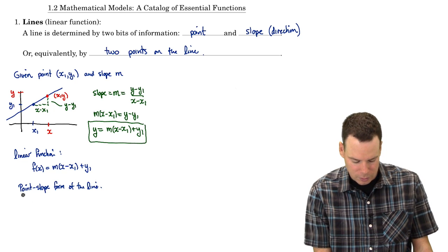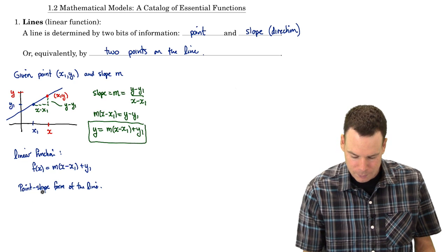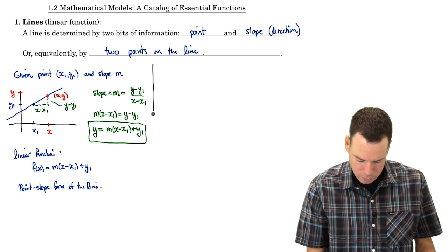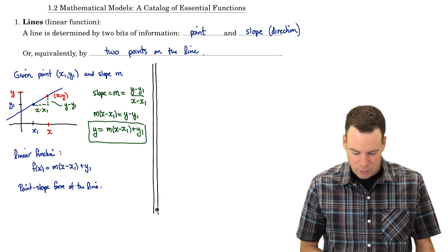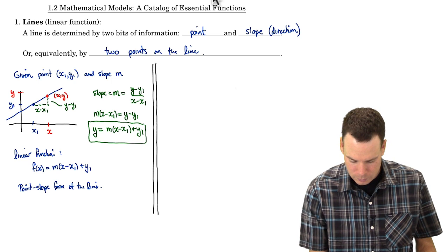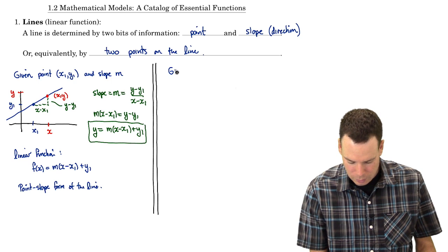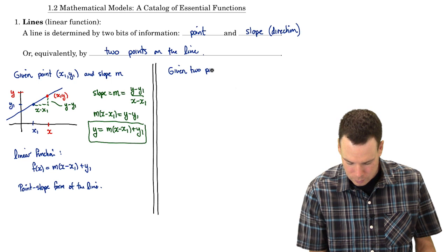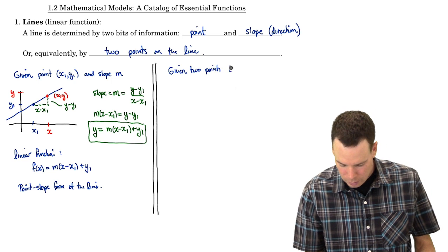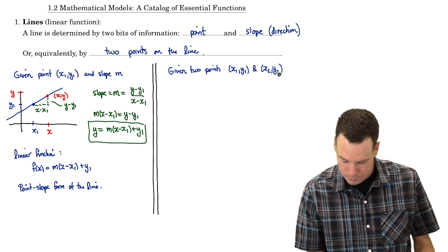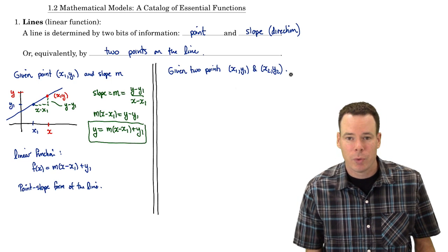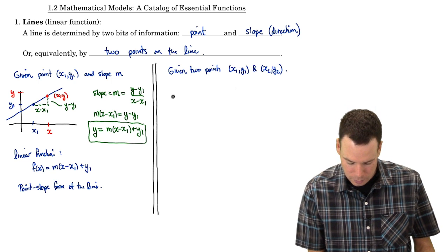What about the other case — what if we're given two points on the line? Suppose we are given two points: (x₁, y₁) and (x₂, y₂). How can we come up with the equation for the line in this case?